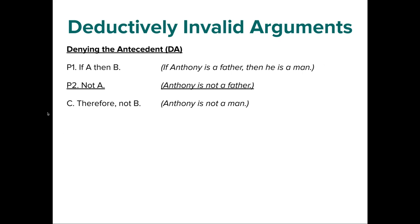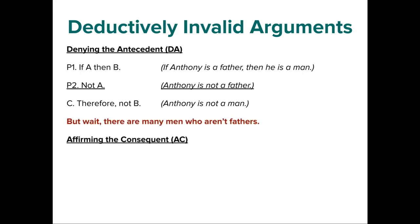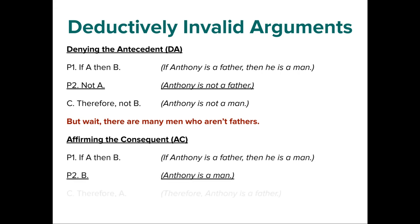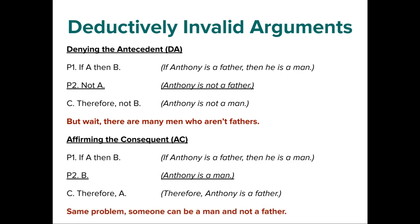The second invalid form is affirming the consequent: if A then B; B; therefore A. Example: If Anthony is a father, then he is a man. Anthony is a man; therefore Anthony is a father — this doesn't follow. Even if P1 and P2 are true, the conclusion could still be false. Another example: if I go to the store, I'll get donuts. I got donuts — but that doesn't mean I went to the store. We don't know how I got the donuts. Be on the lookout for these invalid forms; they look similar to modus ponens and modus tollens.